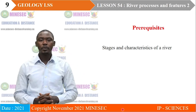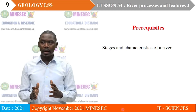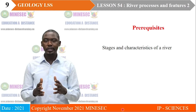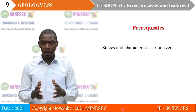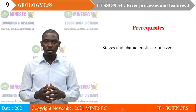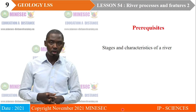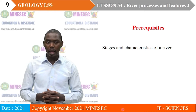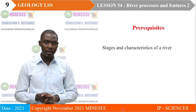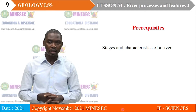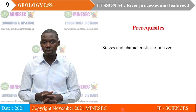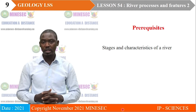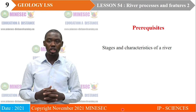To better understand our lesson 54, learners are expected to be versed with the stages and characteristics of a river. These constitute the materials of our previous lessons, during which we observed the three stages of a river's life: the youthful stage where energy level is high and erosion is dominant; the mature stage where energy has dropped and the river involves itself in transportation and deposition; and the old age stage where energy is exhausted and the river involves itself mostly in deposition.